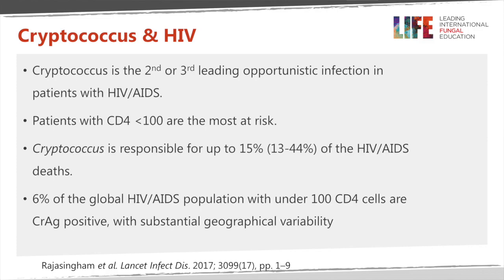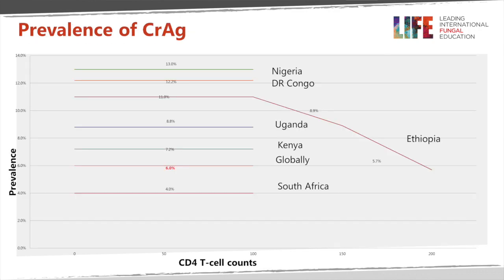6% of the global HIV population who have a CD4 count of under 100 are usually positive for the cryptococcal antigen, which we will discuss in another lecture in terms of diagnosis. There is substantial geographical variability. The antigen is released from the polysaccharide capsule surrounding the yeast and has, over 50 to 60 years, been recognised as the diagnostic test for this disease.